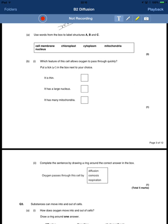That is because the diffusion distance is smaller. So the smaller the diffusion distance, the quicker diffusion will happen. To complete the sentence by drawing a ring around the correct answer in the box: oxygen passes through the cell by diffusion, osmosis, or respiration.